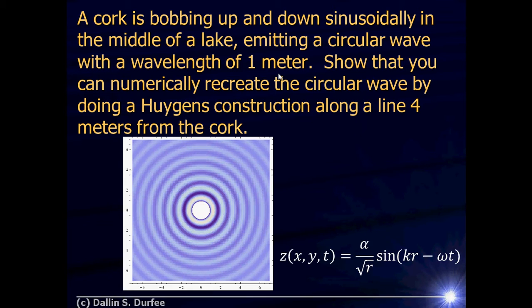So what we have is we have this cork that's bobbing up and down here, and it's emitting these circular waves — this is on a lake. Now, what does that wave look like mathematically?